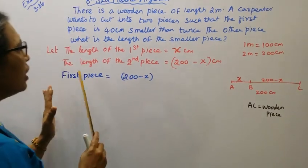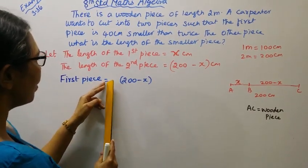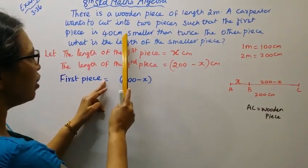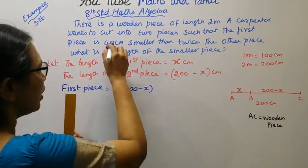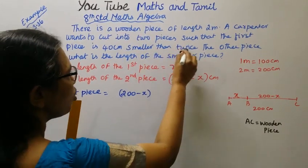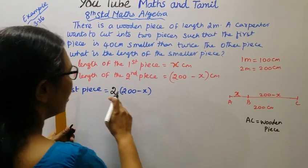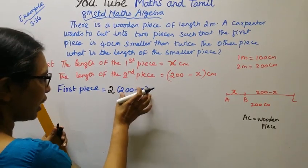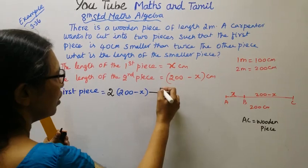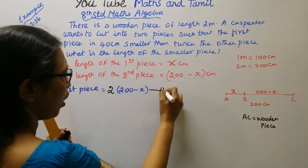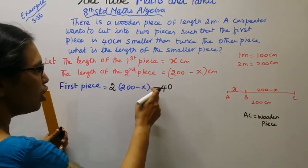Now we have a condition: the first piece is equal to 40 centimeters smaller than twice the other piece. That is, twice the other piece minus 40 centimeters.